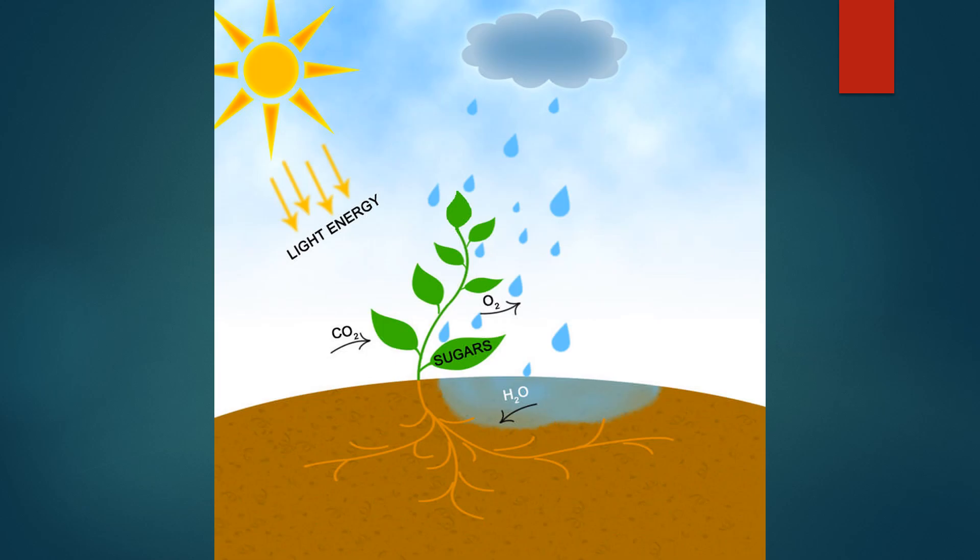To sum up, plants make their own food by processing sunlight, water and carbon dioxide together and form oxygen and glucose, which is called photosynthesis.